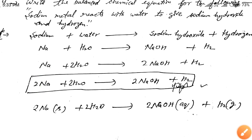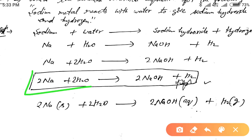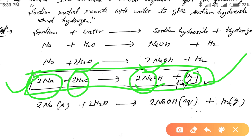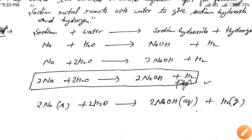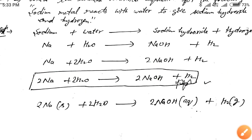We multiply sodium by two on the reactant side. After multiplying, the equation is balanced: two sodium atoms on each side, four hydrogen atoms on each side, and two oxygen atoms on each side. This is the complete balanced equation.